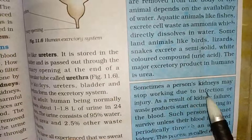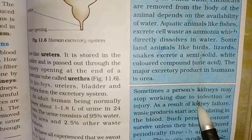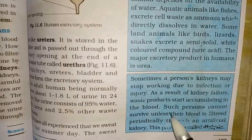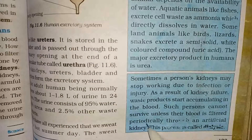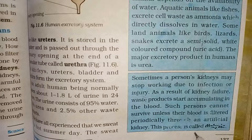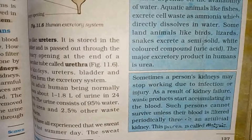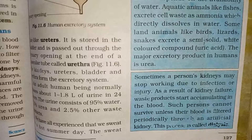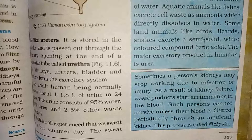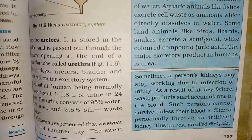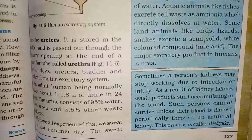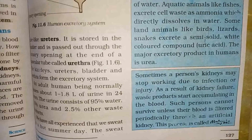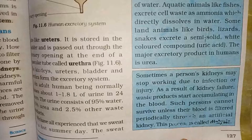Sometimes a person's kidneys stop working due to infection or injury. As a result of kidney failure, waste products start accumulating in the blood. Such a person cannot survive unless their blood is filtered periodically through an artificial kidney — this process is called dialysis. Dialysis mein kya hota hai: artificially blood ko bahar nikaalke filter karke wapas andar bheja jaata hai.